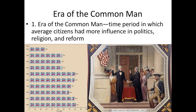Whenever a group gains suffrage, more laws will be passed to support that group, because politicians need their votes. You'll see average people have more influence in laws passed. Debtor's prison — going to prison for owing debt — will start to be abolished, helping the common man. The Second Great Awakening and reform movements like treatment of the mentally ill also tie into this era.